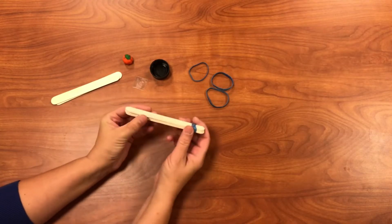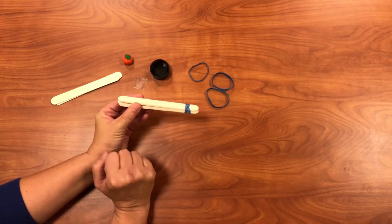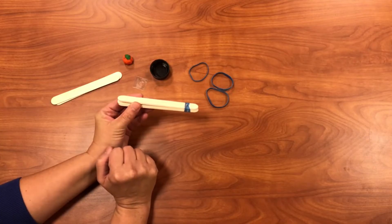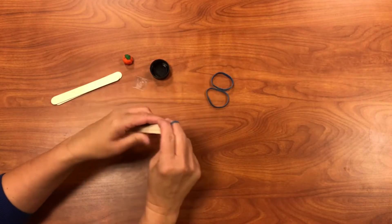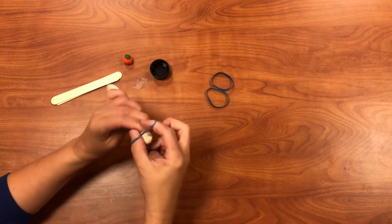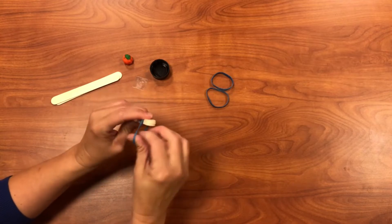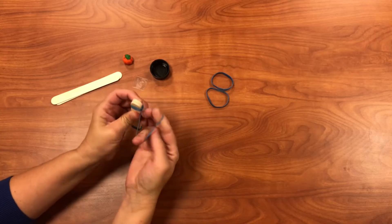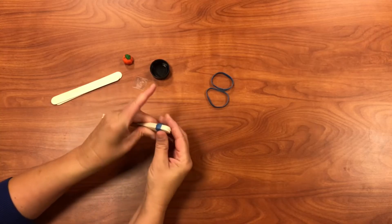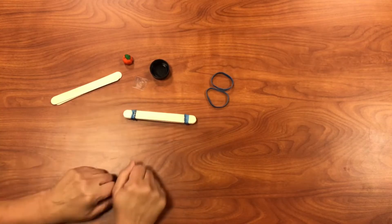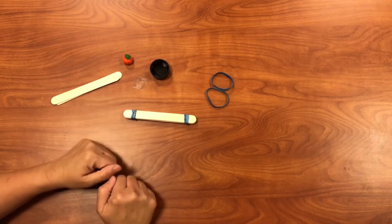Go ahead and grab another rubber band and do the same thing to the other side, so it should look like this. This is going to be a little wedge in between our sticks to help give us some leverage.